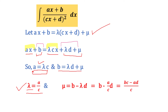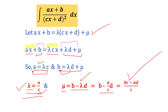From the equation b = λd + μ, calculate the value of μ: take λd to the other side, giving μ = b − λd. Now substitute λ = a/c, so μ = b − (a/c)d. Taking the common LCM, the value comes out to be μ = (bc − ad)/c. So λ = a/c and μ = (bc − ad)/c.